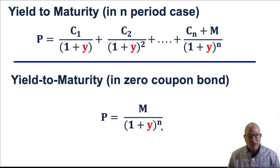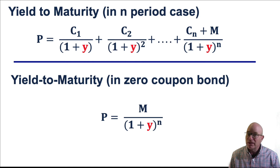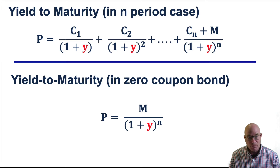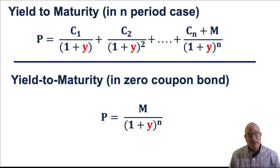When we have a zero-coupon bond, our yield-to-maturity formula simplifies. We have the three-variable case at the top. In the zero-coupon case, all the C's equal zero, and we get the equation listed at the bottom. We take the ending par value and discount it back to the present to come up with the price of the bond.